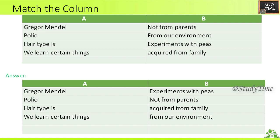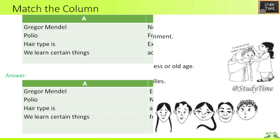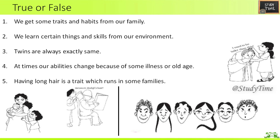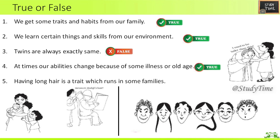True or False: First — we get some traits and habits from our family. True. Second — we learn certain things and skills from our environment. True. Third — twins are always exactly the same. False; it is not necessary. Fourth — at times our abilities change because of some illness or old age. True. Fifth — having long hair is a trait which runs in some families. True.